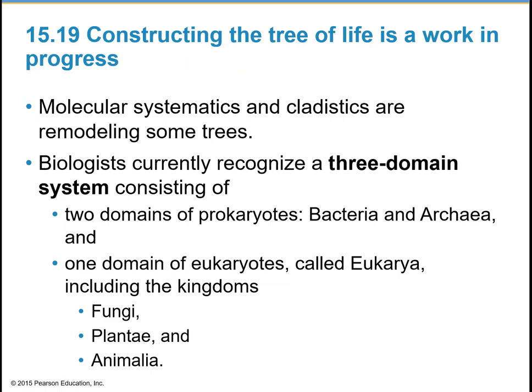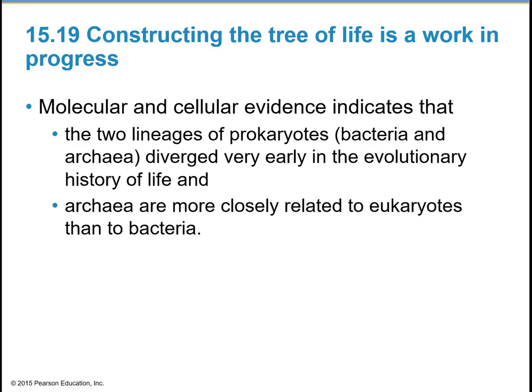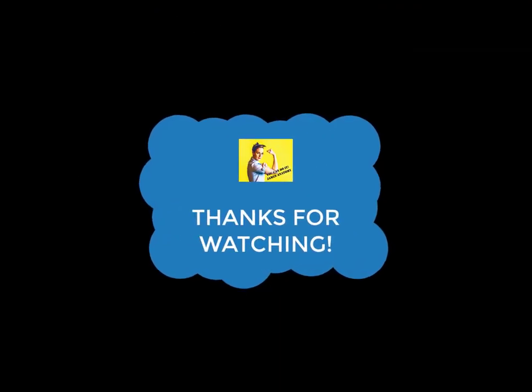Molecular systematics and cladistics are remodeling some of these trees. Biologists currently recognize a three-domain system: two domains of prokaryotes — bacteria and archaea — and one domain of eukaryotes called Eukarya, which includes the kingdoms Fungi, Plantae, and Animalia. Molecular and cellular evidence indicates that the two prokaryote lineages diverged very early in the evolutionary history of life, and that archaea are actually more closely related to eukaryotes than they are to bacteria. This concludes chapter 15.